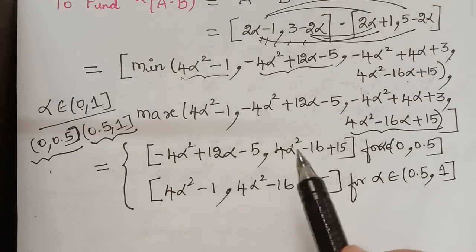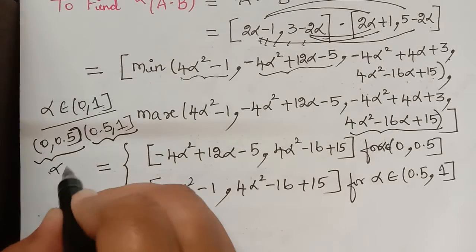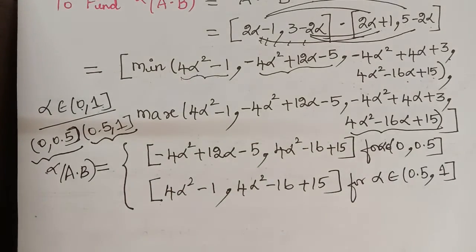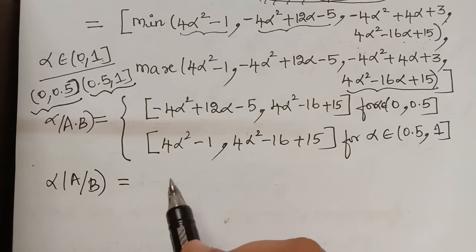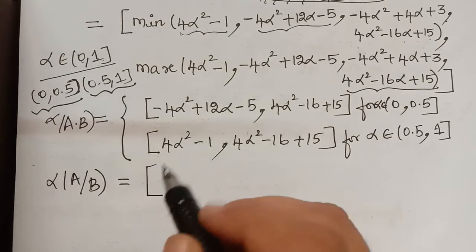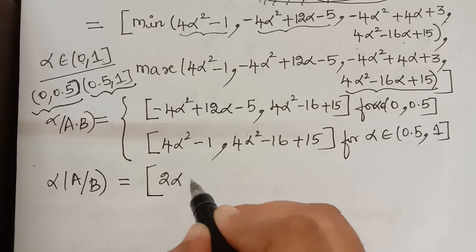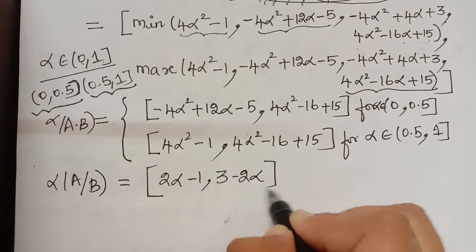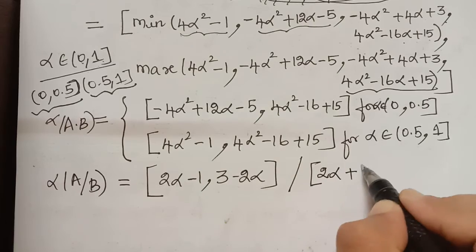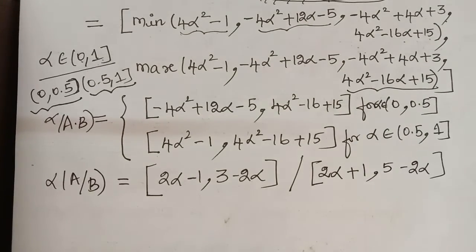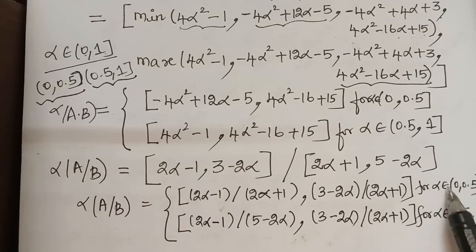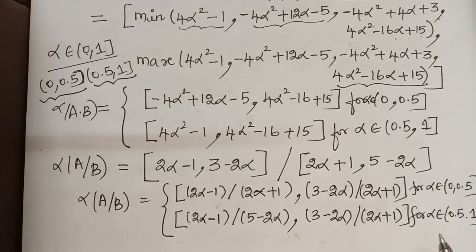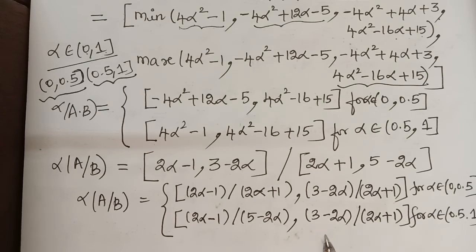These are the two possibilities for the alpha cut of a multiplied with b. In a similar way we can find the alpha cut of a divided by b. That is the interval [2α − 1, 3 − 2α] divided by the interval [2α + 1, 5 − 2α]. Using the same minimum and maximum approach, we arrive at two results: one for α ∈ (0, 0.5] and another for α ∈ (0.5, 1].